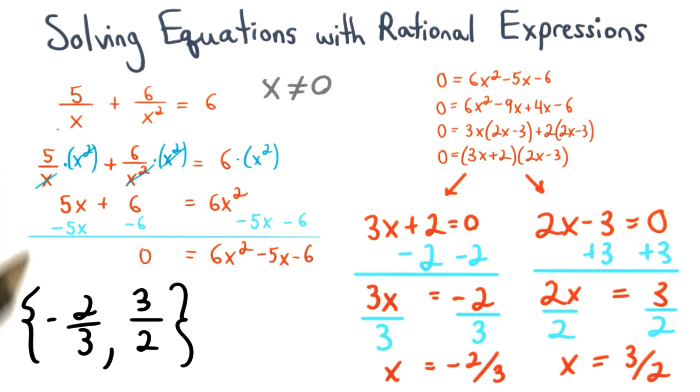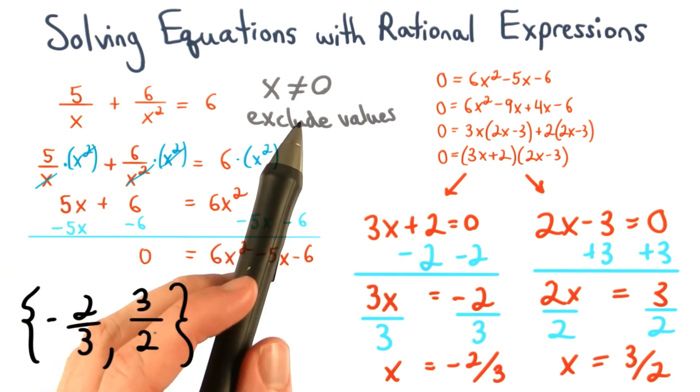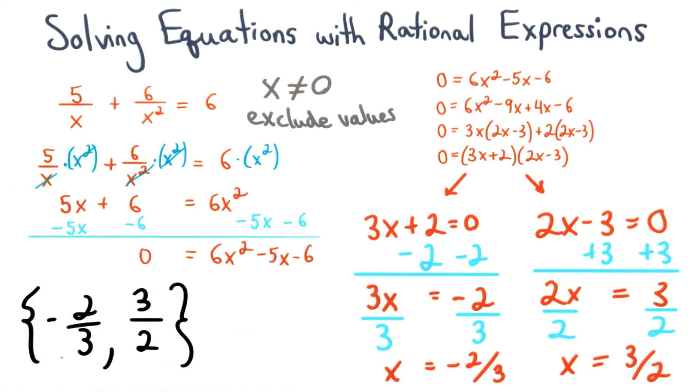The last thing we want to do for our solution set is to make sure we check the excluded values. We know for these denominators, x cannot equal 0, or else we would have fractions that would be undefined. Since both of these values are not 0, we can rest assured that this is our correct answer.